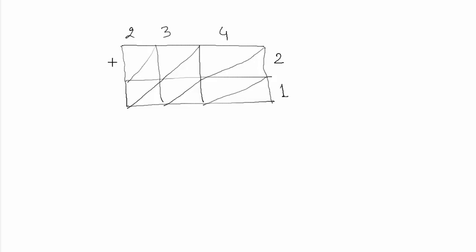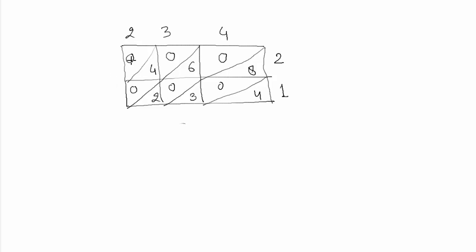Partition each cell diagonally. Now fill in the box: 2×2 is 4, write 04; 3×2 is 6, write 06; 4×2 is 8, write 08. For the next row: 1×2 is 2, write 02; 3×1 is 3, write 03; 4×1 is 4, write 04.